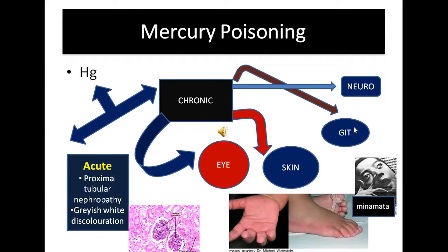In nervous system manifestations, one neuropsychiatric condition is erythism, where there is shyness and timidity seen in persons affected by mercury poisoning. Ritalin is the drug used to treat that condition.